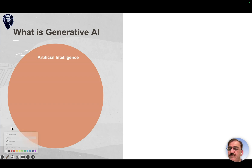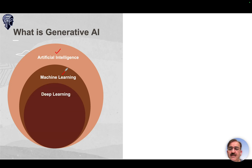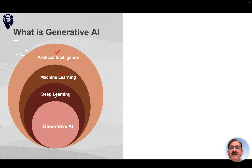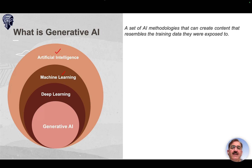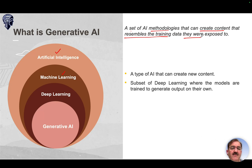What is Generative AI? Artificial intelligence is the umbrella, under which we have machine learning as a subset. Deep learning is a subset of machine learning, and Generative AI is a subset of deep learning. By definition, Generative AI is a set of AI methodologies that can create content resembling the training data the models were exposed to.